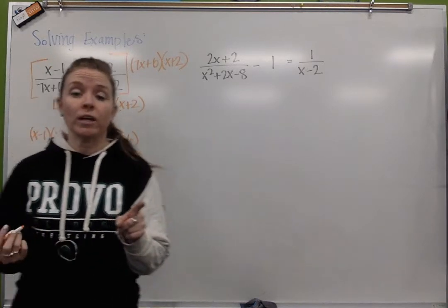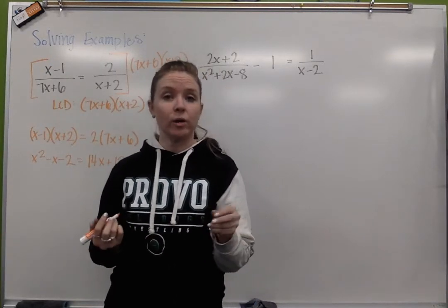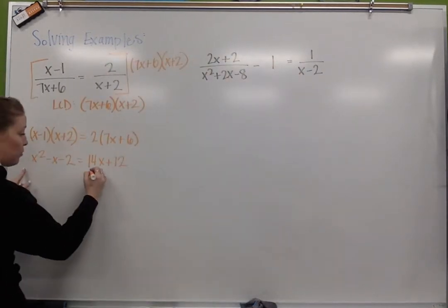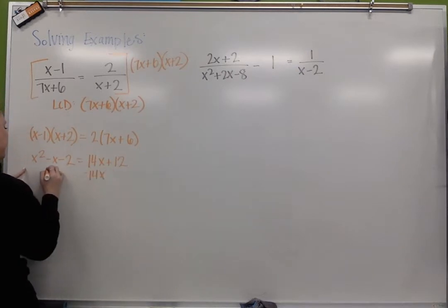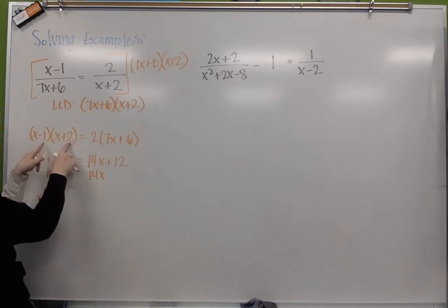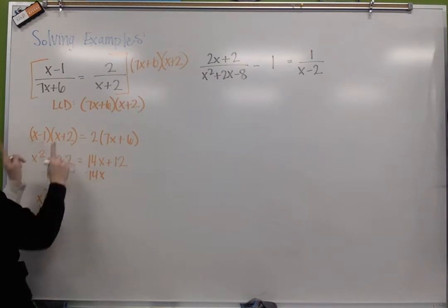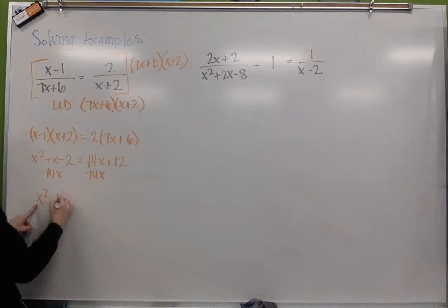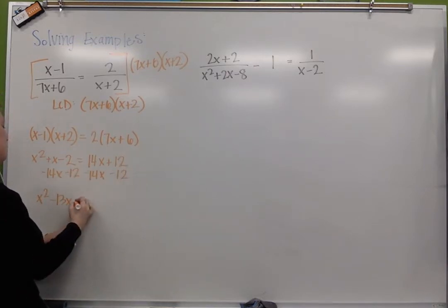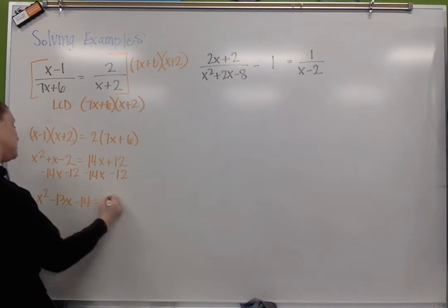So because I have a quadratic, when we solve a quadratic we always want it set equal to 0 before we solve. So I'm going to minus my 14x over, so I get x squared. By the way, going back, this should be a plus x. x squared plus x, positive 2 plus negative 1 is 1. So I have x squared minus 13x. I'm going to go ahead and minus my 12 over so I get negative 14 equals 0.